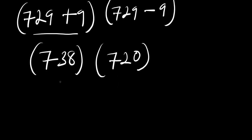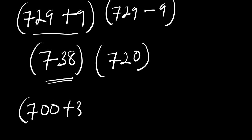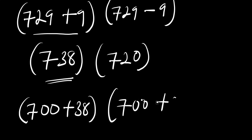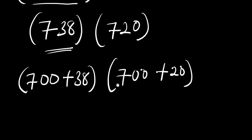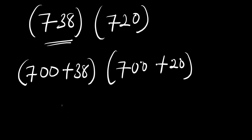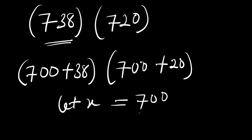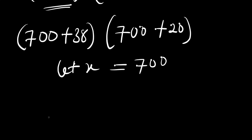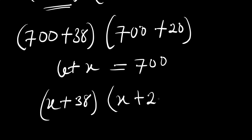We can rewrite 738 as the sum 700 plus 38 for ease of simplification, and 720 as 700 plus 20. So we have 700 plus 38 times 700 plus 20. Now we let x equal 700 to reduce the whole expression, giving us x plus 38 times x plus 20.